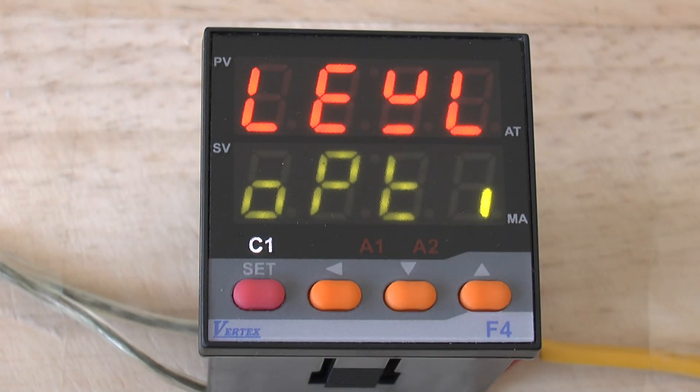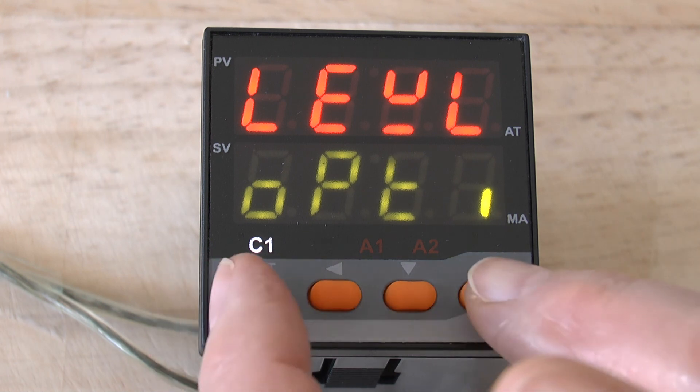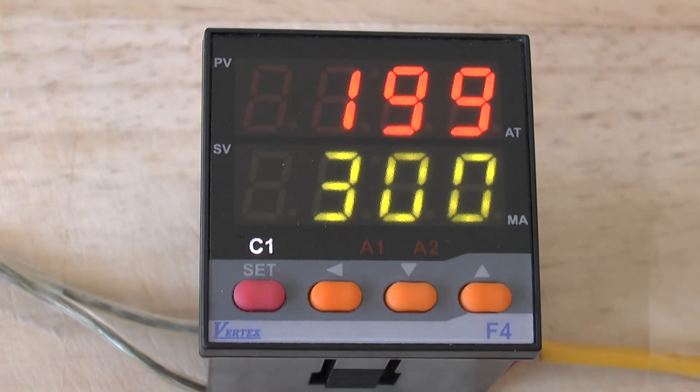We are back to level. So now having completed adjusting any of the parameters that we wanted to adjust, we simply press the SET and the UP button together and it'll take us back to the normal operating state of the controller.